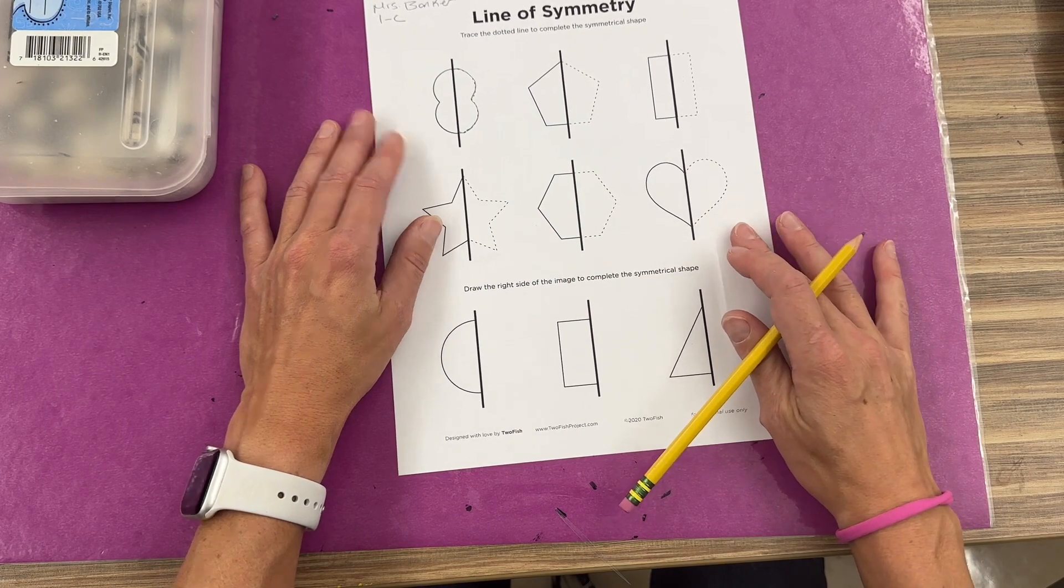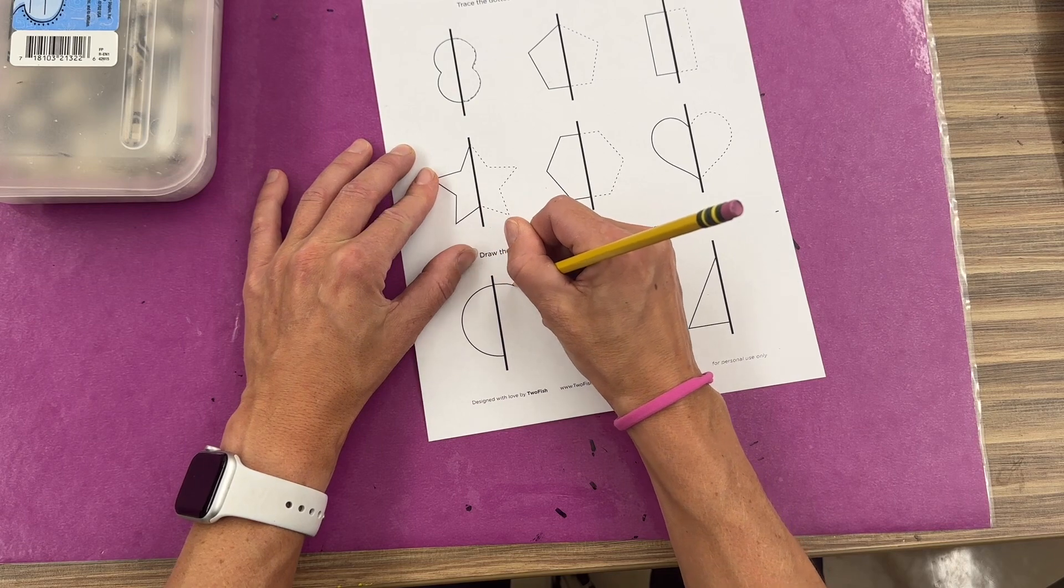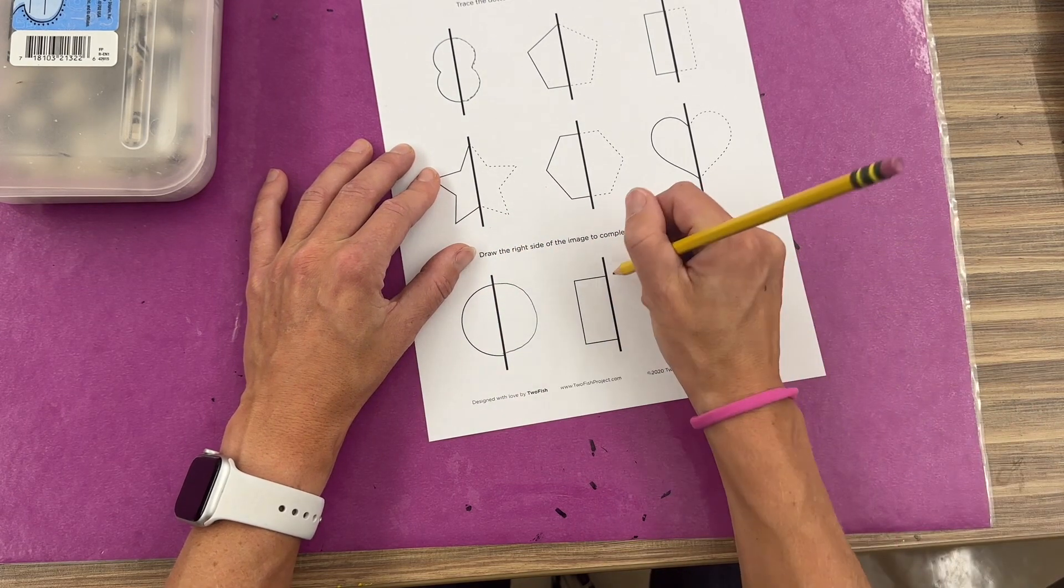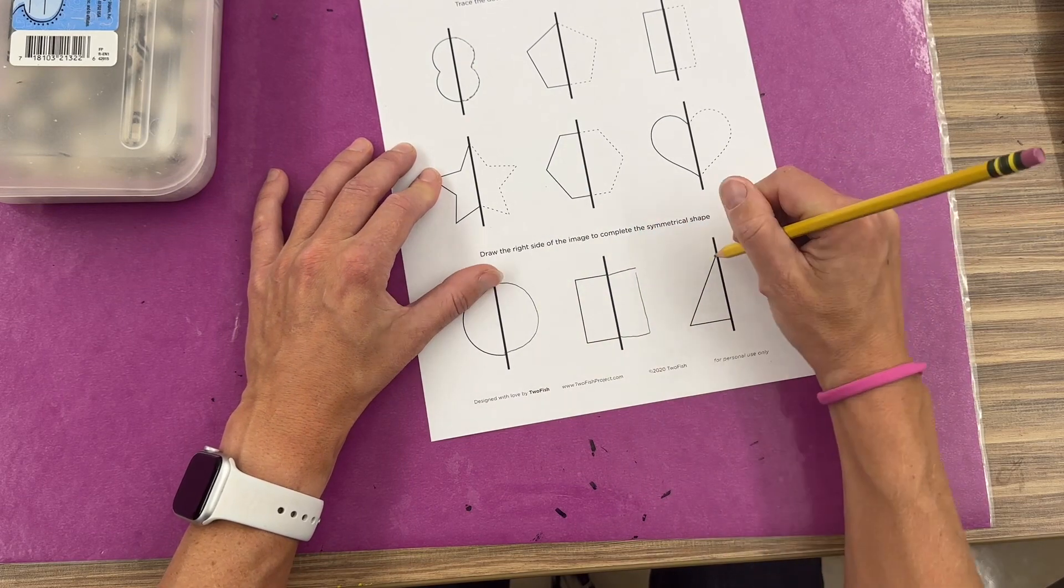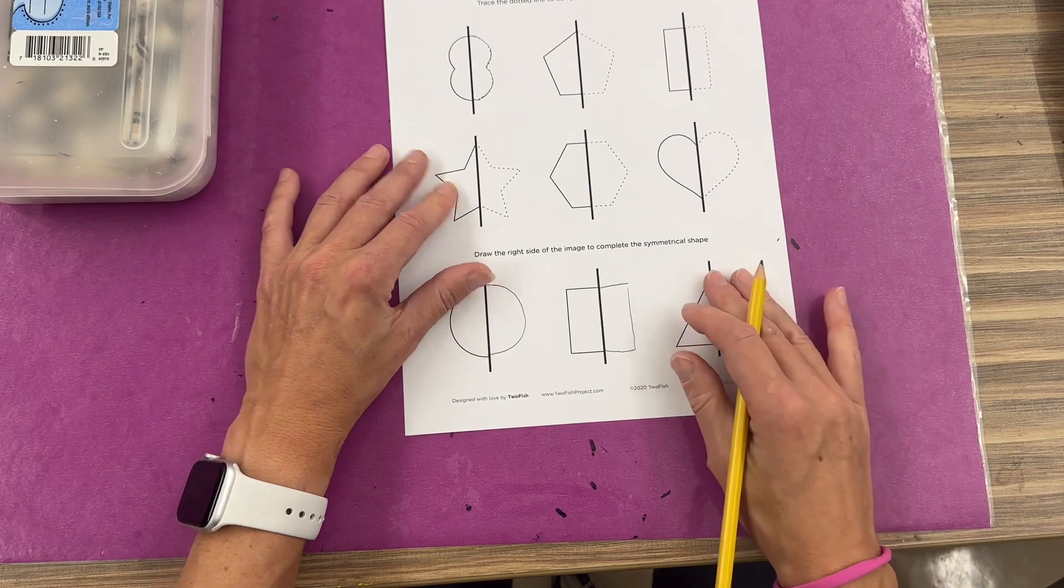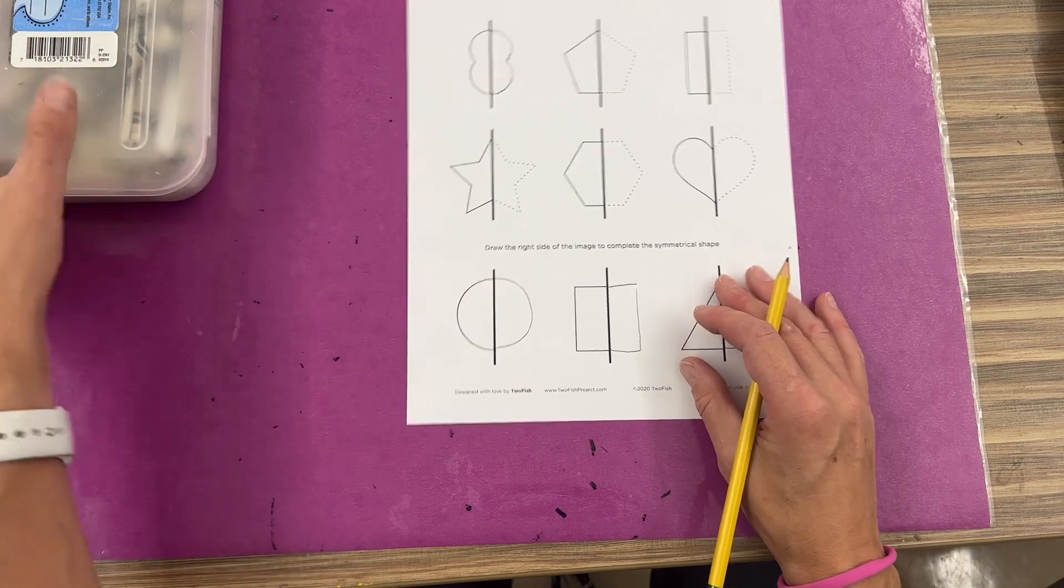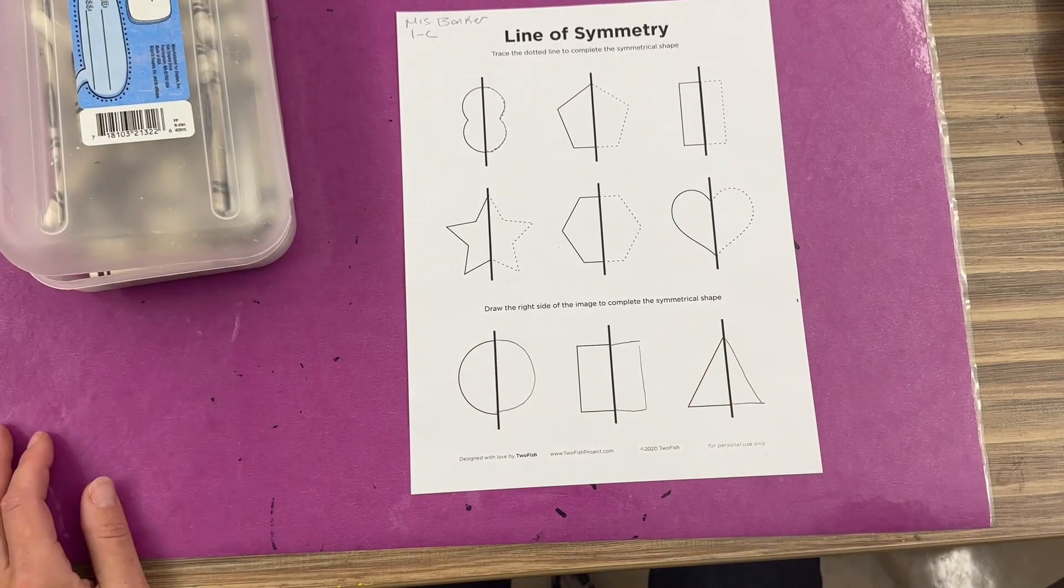When I'm done with that the second part's a little harder. I'm going to complete the whole shape the best that I could. So what would be on the other side. Now when you're all done with this you're going to bring it up to the front and then you'll receive your paper and you can take a white crayon to begin the next part of the artwork.